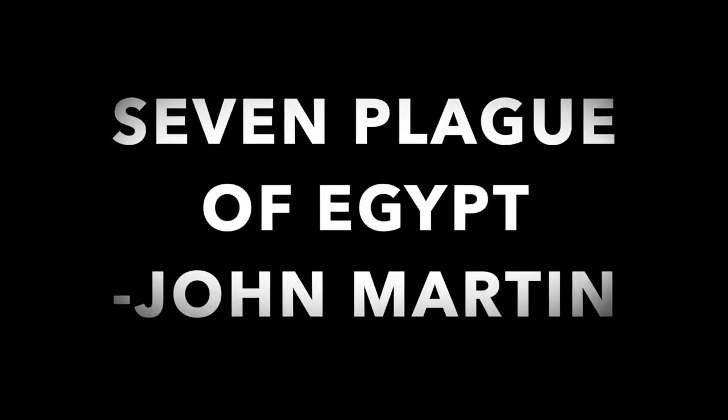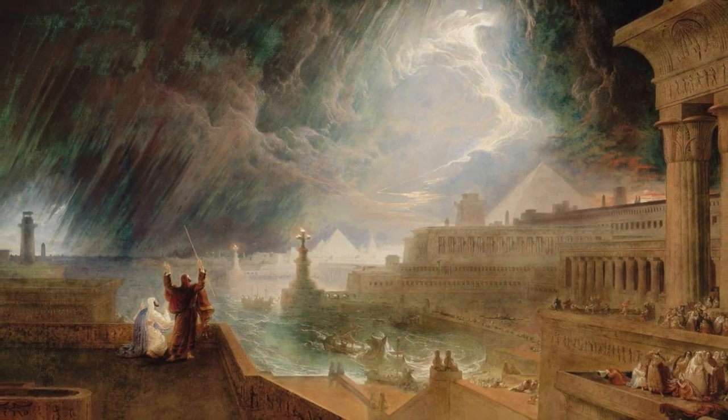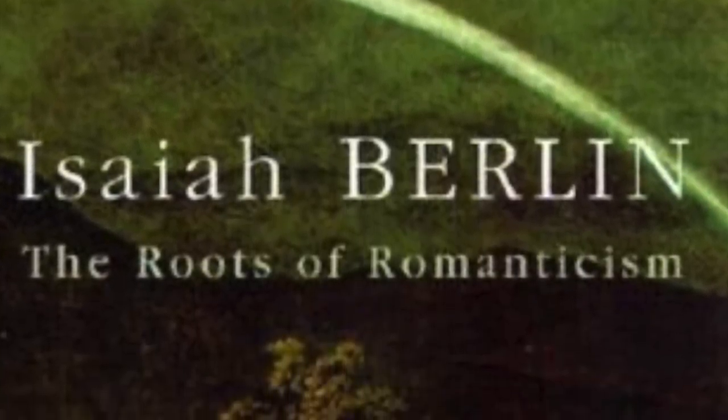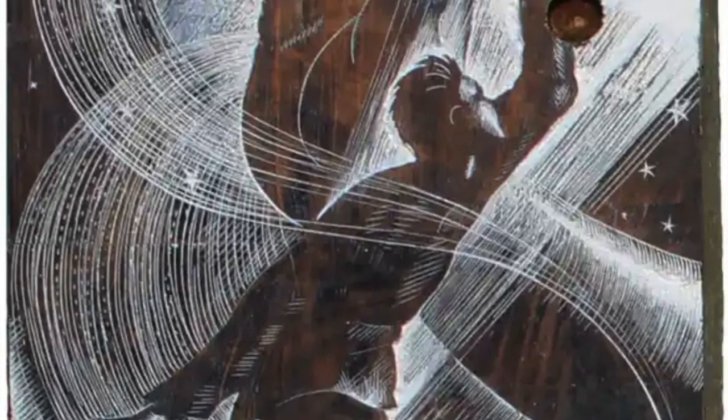The Roots of Romanticism is a book written by Isaiah Berlin. In his book, Berlin explains how the movement of Romanticism changed the course of history. He surveys the many attempts to define Romanticism and sublimates its essence. He discusses some of the greatest thinkers and artists of the 18th and 19th centuries, and I believe that John Martin fits the criteria of what makes an artist authentic and extraordinary.